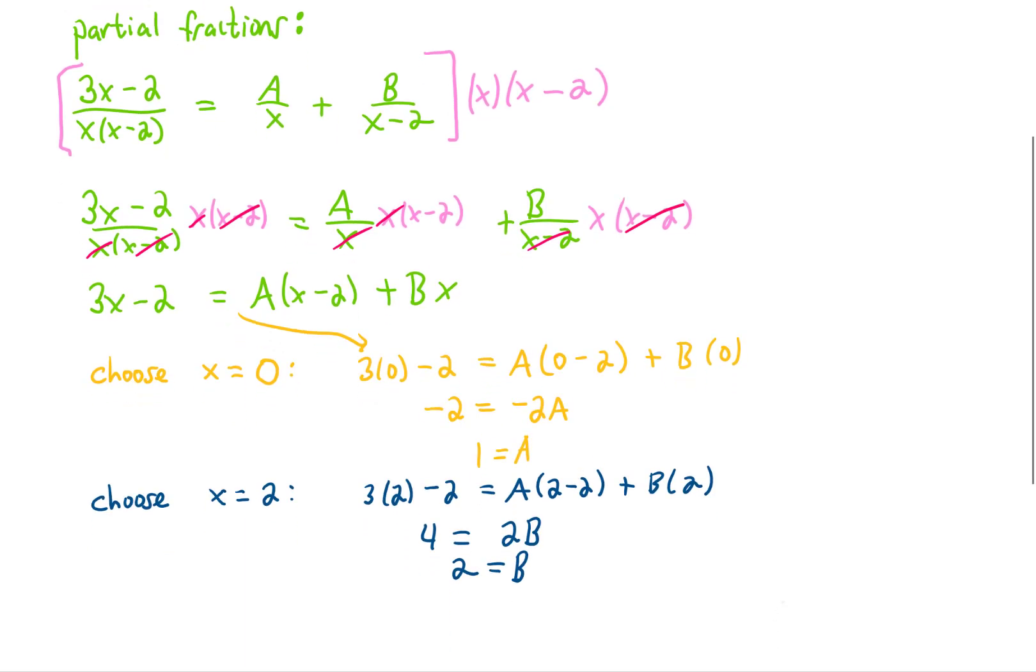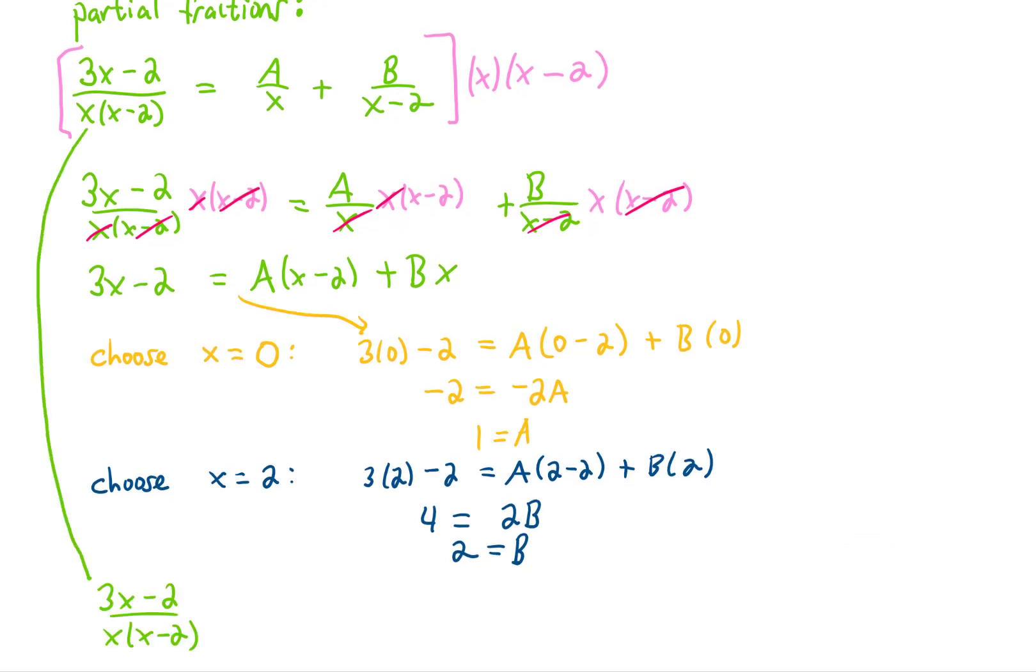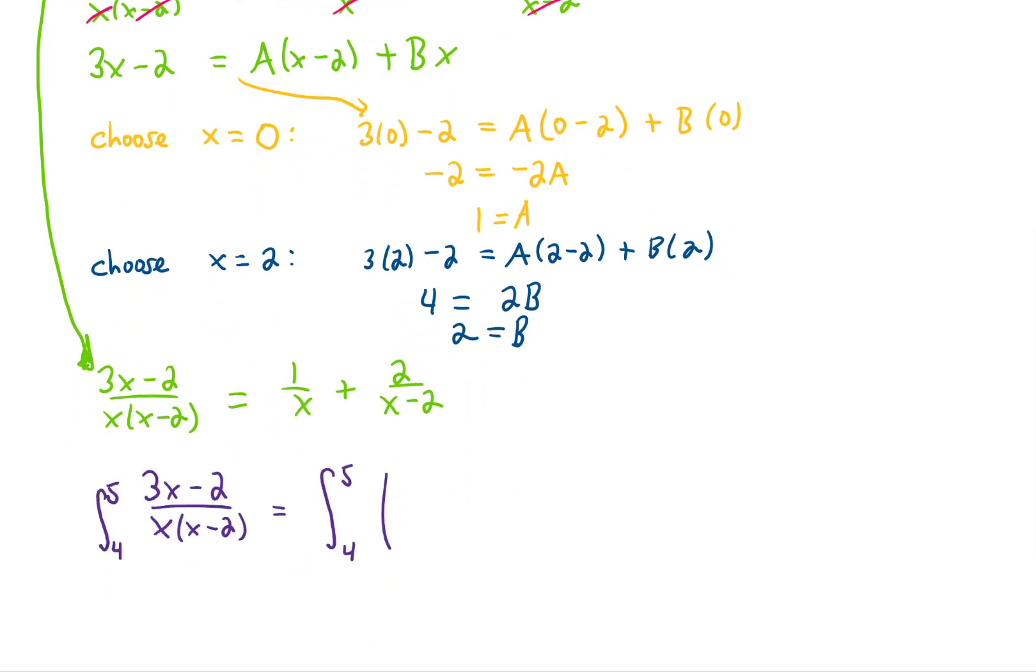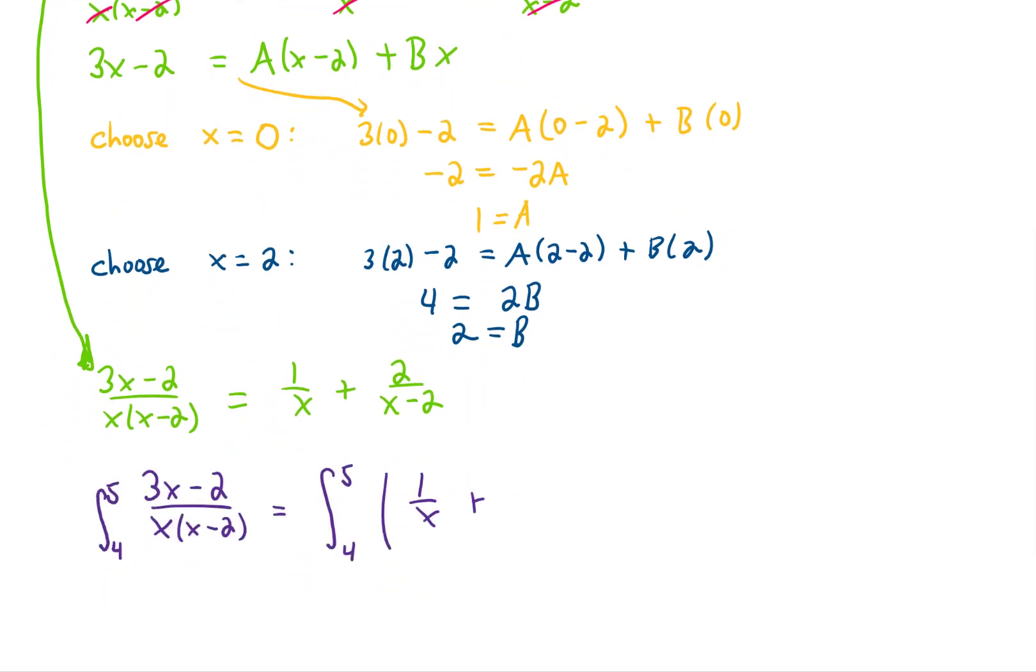Now that we've found values for A and B, our partial fraction problem is pretty much complete. If we look all the way back at our initial setup here, we can now say that 3x minus 2 over x times x minus 2 can be rewritten as 1 over x plus 2 over x minus 2. Now I'm going to rewrite the original integral, and we're going to replace that integrand with what we just found.